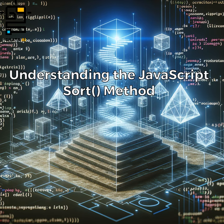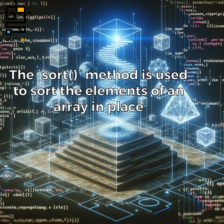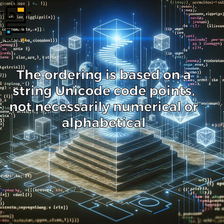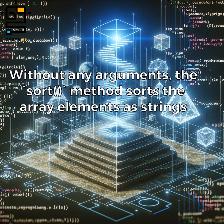Understanding the JavaScript sort method: the sort method is used to sort the elements of an array in place. The ordering is based on string Unicode code points, not necessarily numerical or alphabetical. Without any arguments, the sort method sorts the array elements as strings.